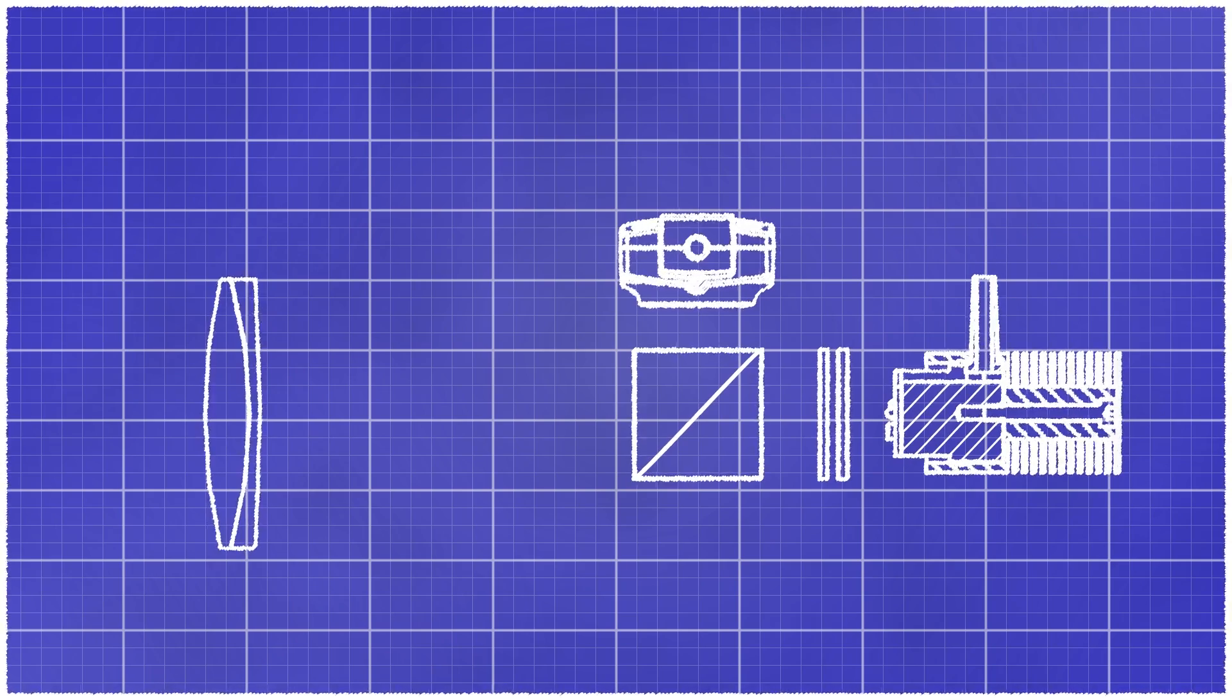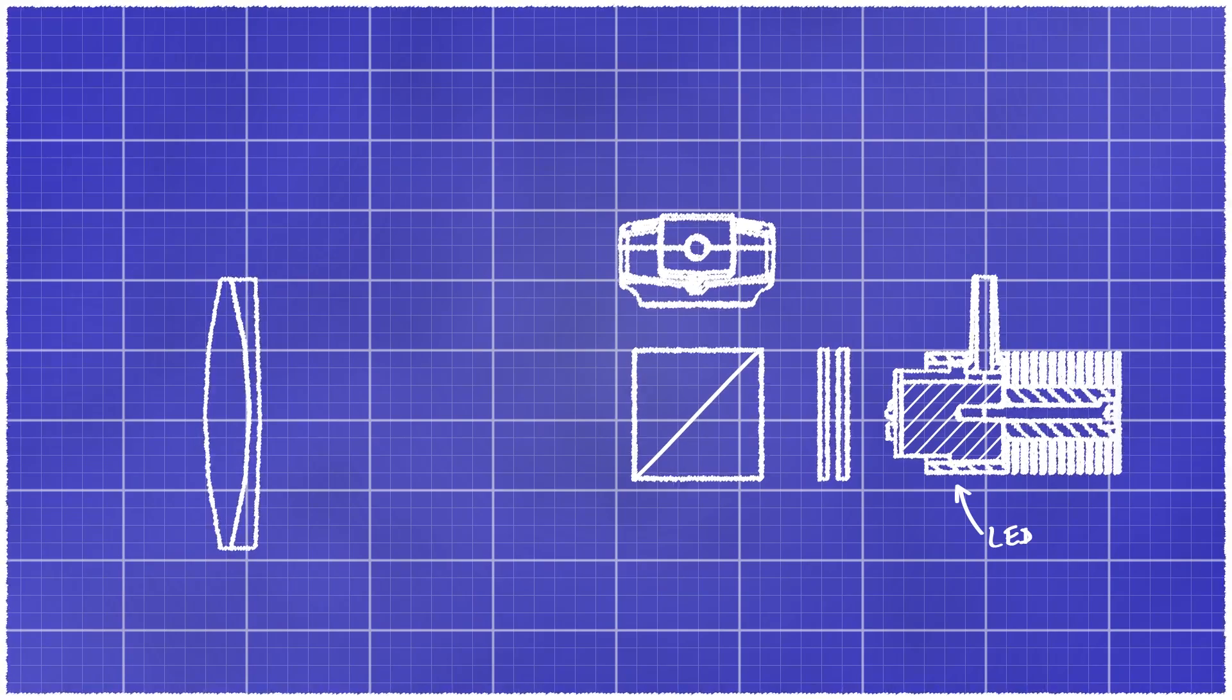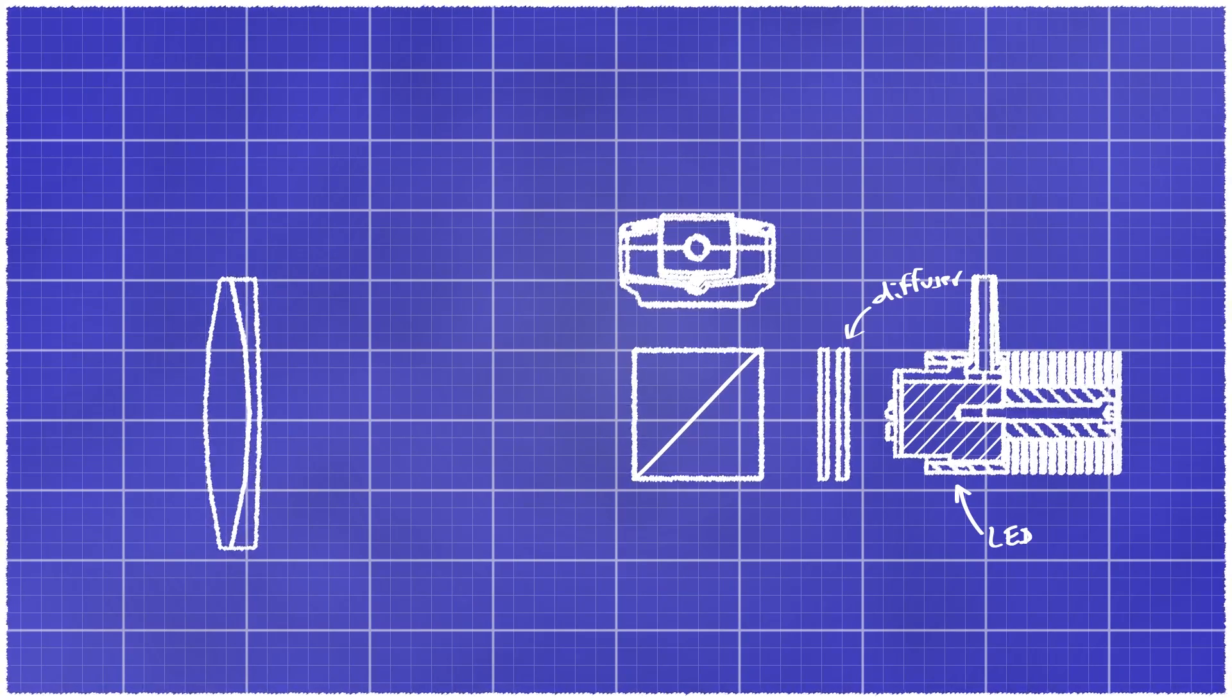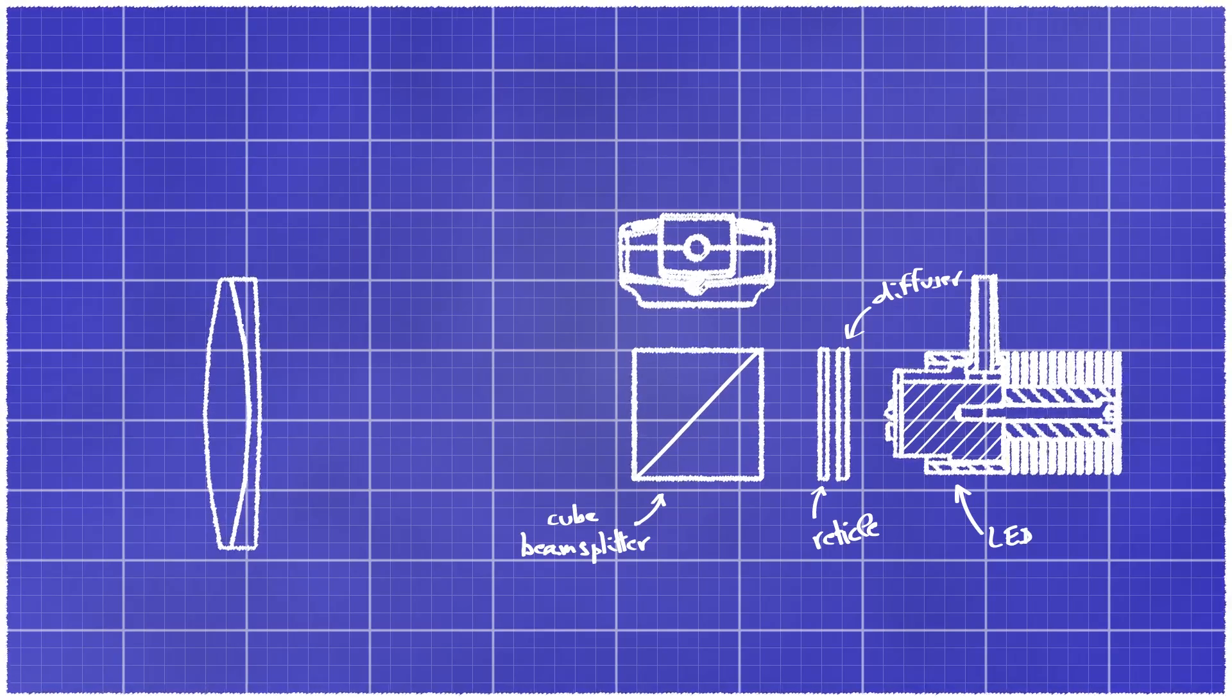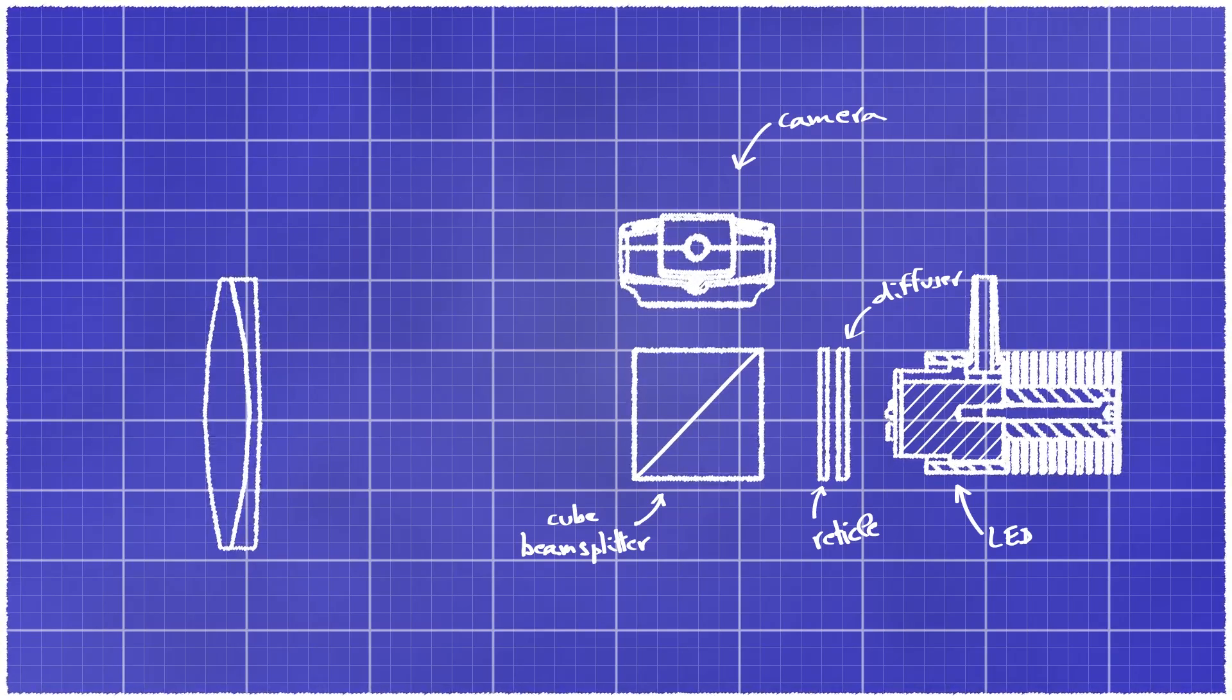Okay, so this is our auto-collimator setup. It is made from a LED light source, a diffuser screen, a reticle target, a 50% cube beam splitter, a camera, and a collimating lens.